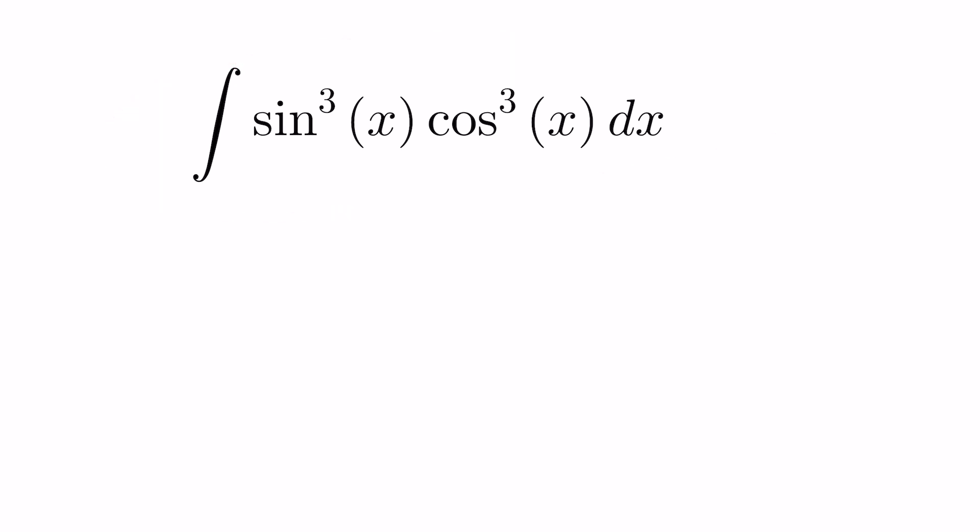This is the integral of sine cubed x cos cubed x dx. So the first thing we want to do here is you want to break this down into something you know. So it looks a lot like we know the following identity. I know the 2 sine x cos x, I know that that's equal to the sine of 2x. So therefore, I know the sine x times cos of x must equal 1 half sine of 2x.